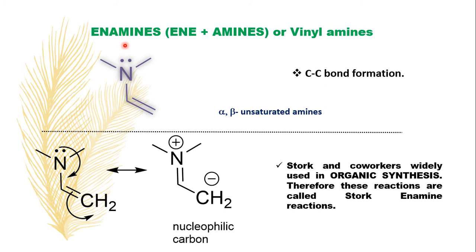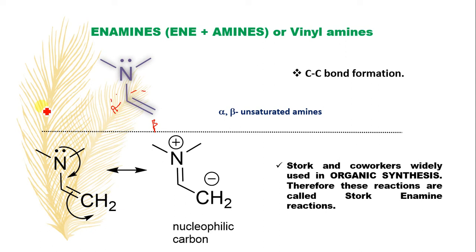What are enamines? The name itself indicates 'en' plus 'amines' — that means amines are connected to 'en,' a double bond. So they can be called as vinyl amines or alpha-beta-unsaturated amines. Alpha-beta-unsaturated amines are also called as enamines.